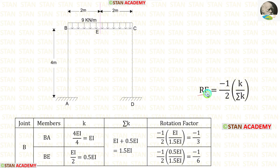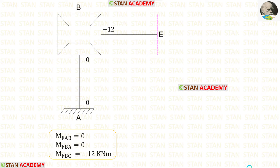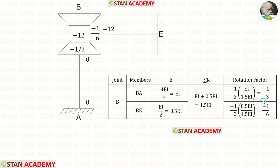Now let us find the rotation factor. The formula is minus 1 upon 2 into k upon sigma k. We have calculated the k and sigma k values and can now find the rotation factors. In joint B, the rotation factor for BA is minus 1 upon 3, and for BE the rotation factor is minus 1 upon 6.